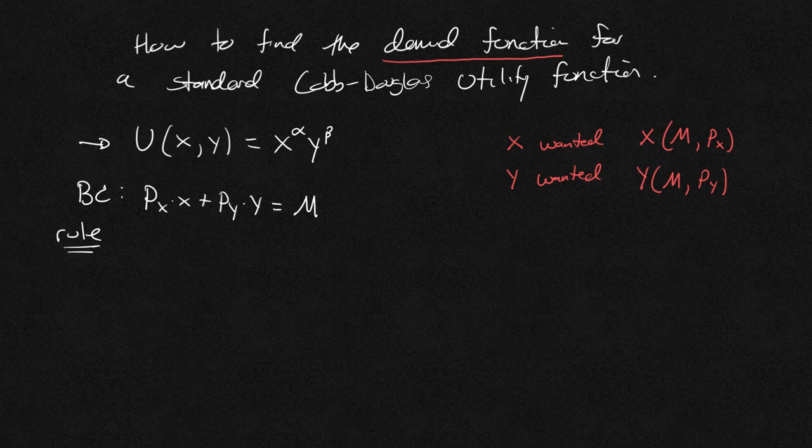And we talk about this rule for maximization, this rule that is covered in a different video. And we know for a standard Cobb-Douglas, it's always going to come out to be alpha over beta y over x equals px over py.